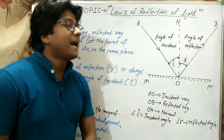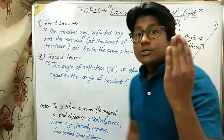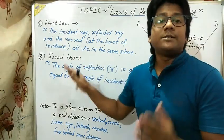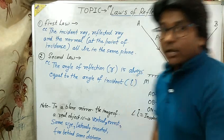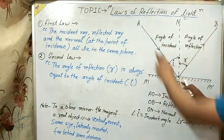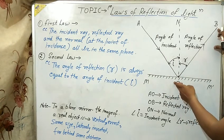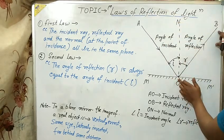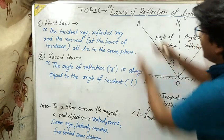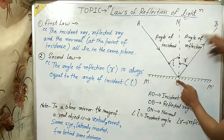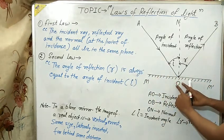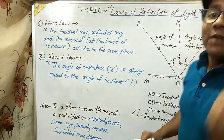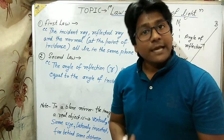The first law states that the incident ray, reflected ray, and the normal at the point of incidence all lie on the same plane. AO is the incident ray, OB is the reflected ray, and the normal at the point of incidence O — all three lie in the same plane.